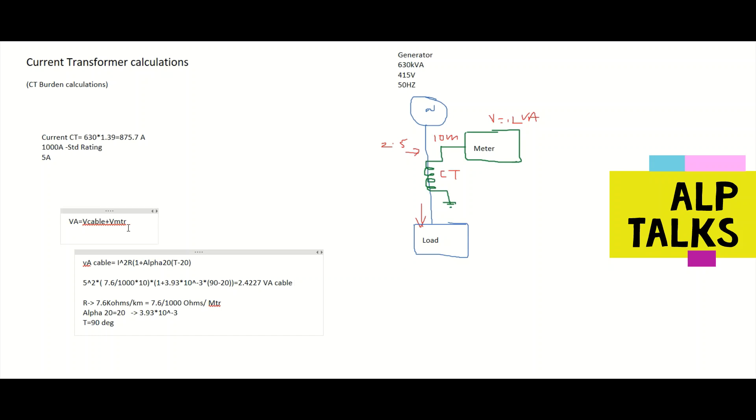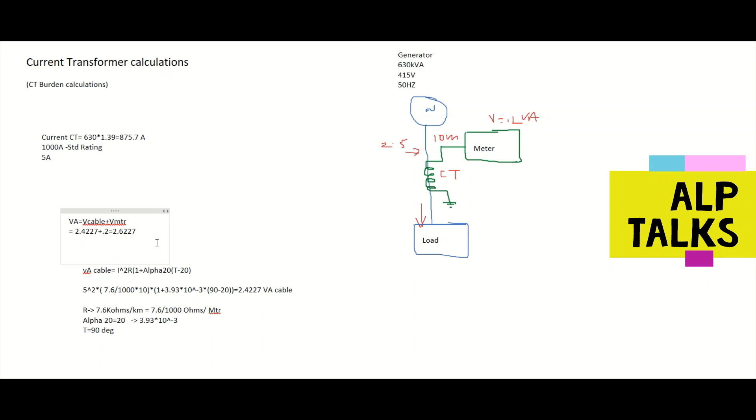So what is the burden now? So now we calculated 2.4227. Already we have 0.2 VA for the meter burden. So together we'll get 2.6227. So we will take standard burden of 5 VA.